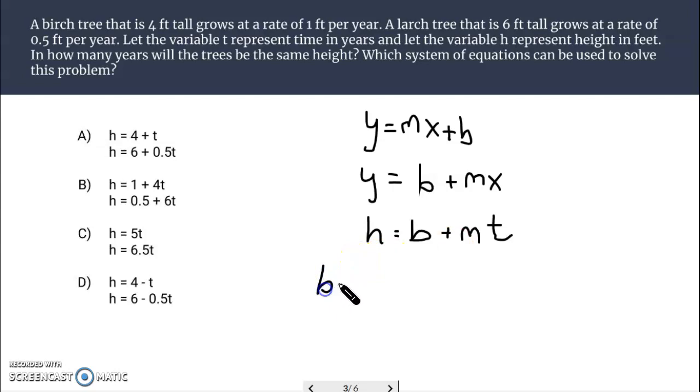So, the birch tree, set up that equation, starts out at four foot, and it grows one foot per year. One times t, one times t the number of years.